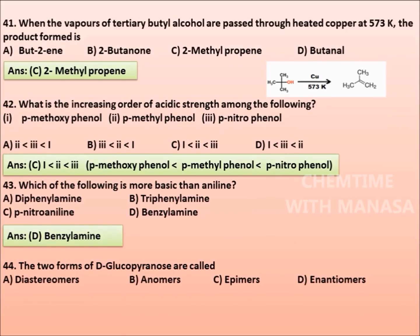The two forms of D-glucopyranose are called diastereomers, anomers, epimers, or enantiomers. Correct answer is option B, anomers.